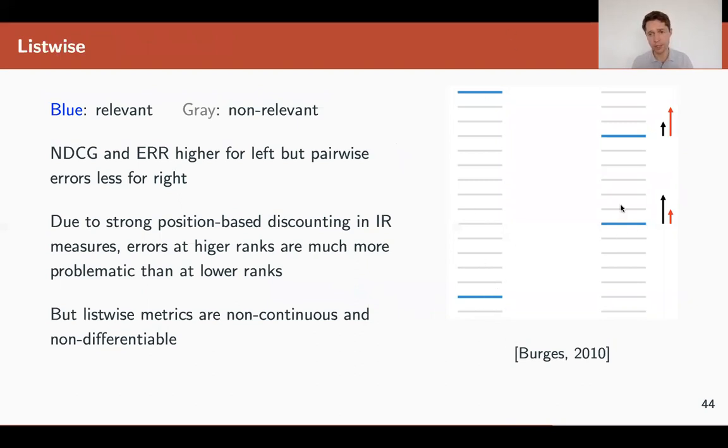And the pairwise would apply forces like black to this document. So small force to this and large force to this to make the correct ranking. But what we want, we want a larger force applied to this ranking, to this document to push high up. And this is less important.